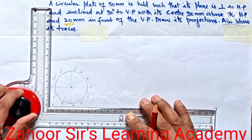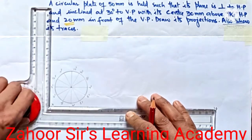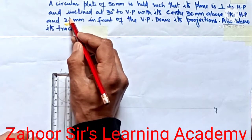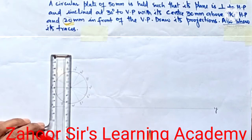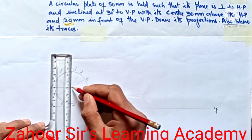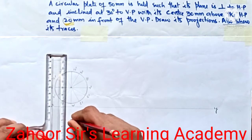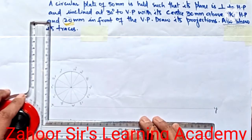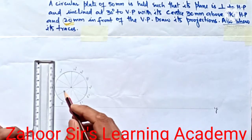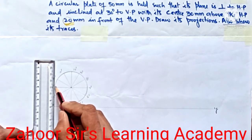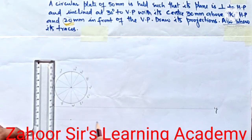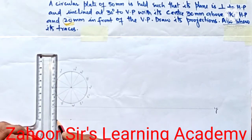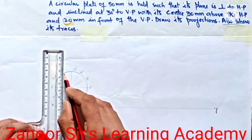Next, the center of that circle is in front of the VP, seen in the HP, that is 20 mm. I'll measure 20 mm from the center point. Then I will draw very light lines and project all points from the front view down to the top view. The top view is seen as a line, so I produce all these points with light construction lines.